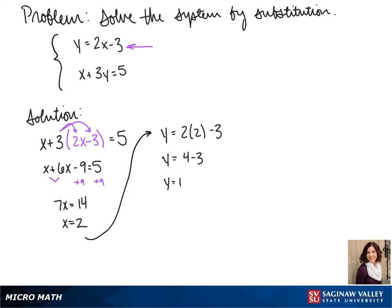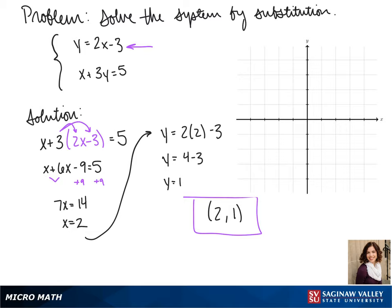So the solution for our system is the point (2, 1). We can see our solution, our intersection, by graphing both lines. To graph the first line, we use our y-intercept and slope to find points. On our second line, we can use our x-intercept and slope to find points and connect those. And we see that where our two lines cross is at our solution.